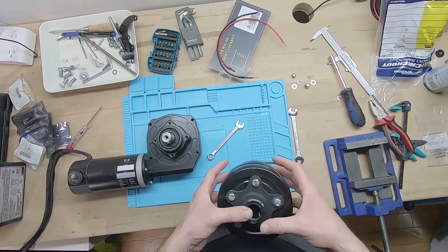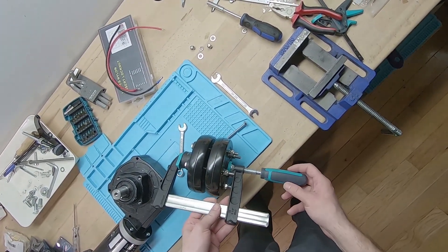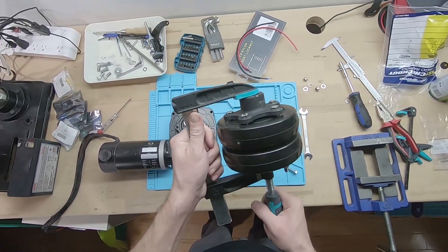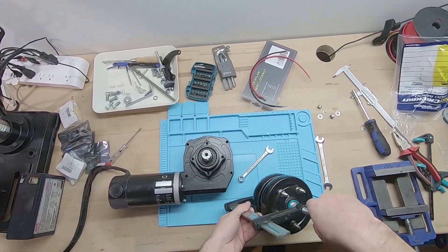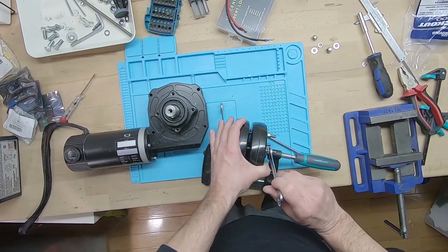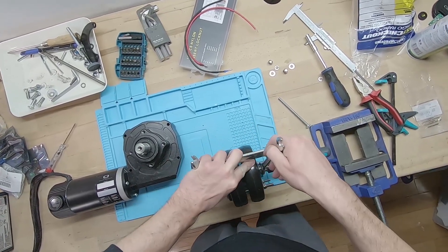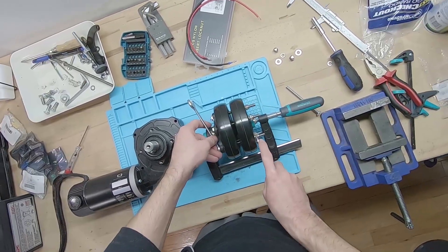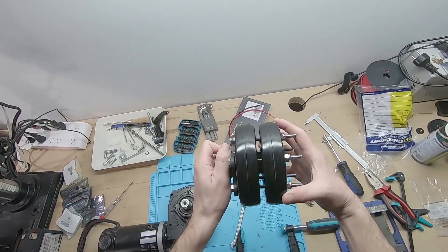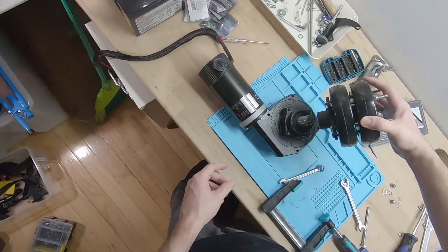Then I used some washers and screwed on the nuts loosely. Next I aligned both tires as parallel as possible and then fixated them with a clamp. And then I tightened all the nuts.